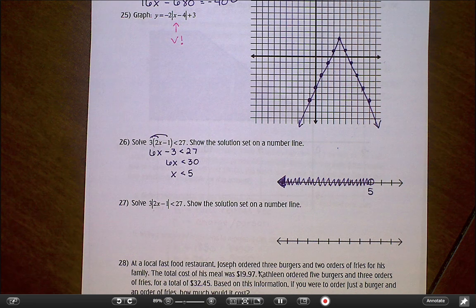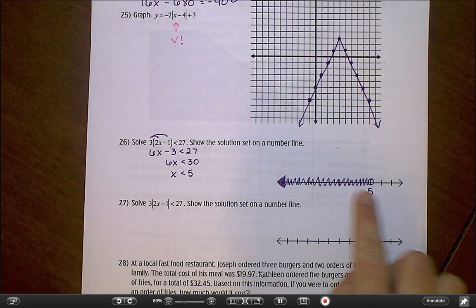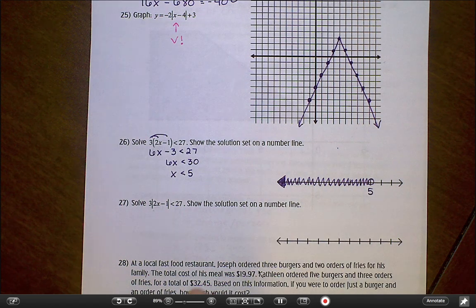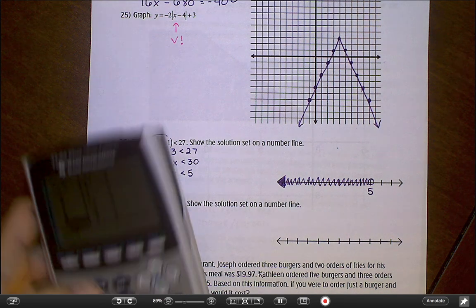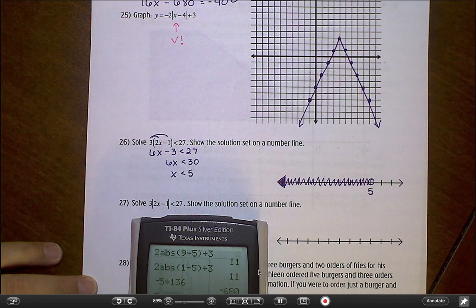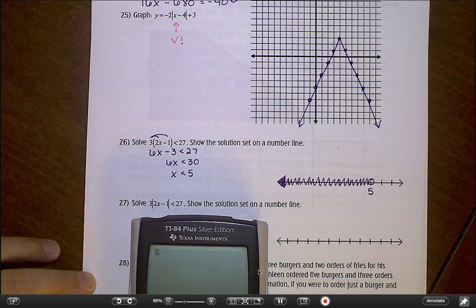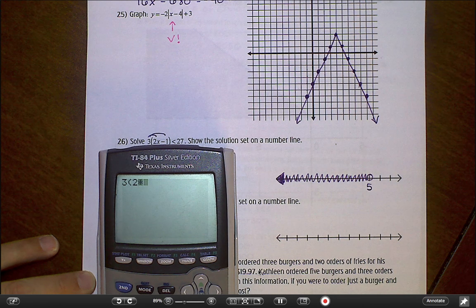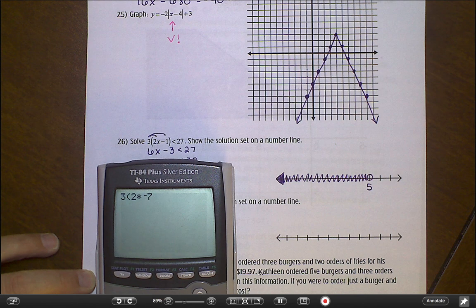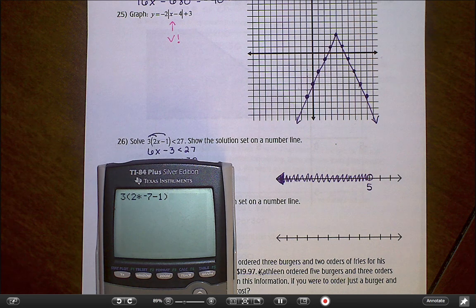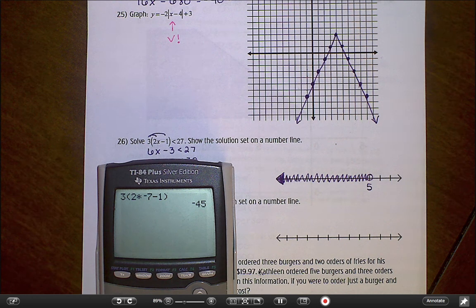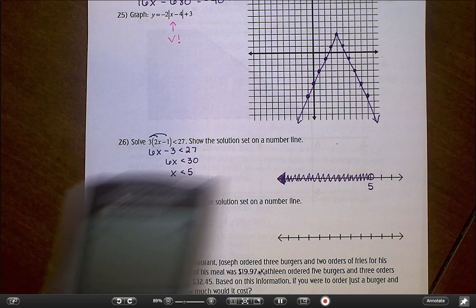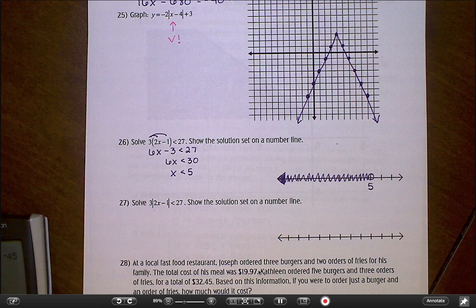If you wanted to check and make sure you were correct, if I plugged in some number from over here, some number that's less than 5, so I'm going to go with maybe negative 7. If I plug in a negative 7, 3 times 2 times negative 7 minus 1, my hope is that this is going to come out to be something smaller than 27. And it does. Negative 45 is significantly smaller than 27.